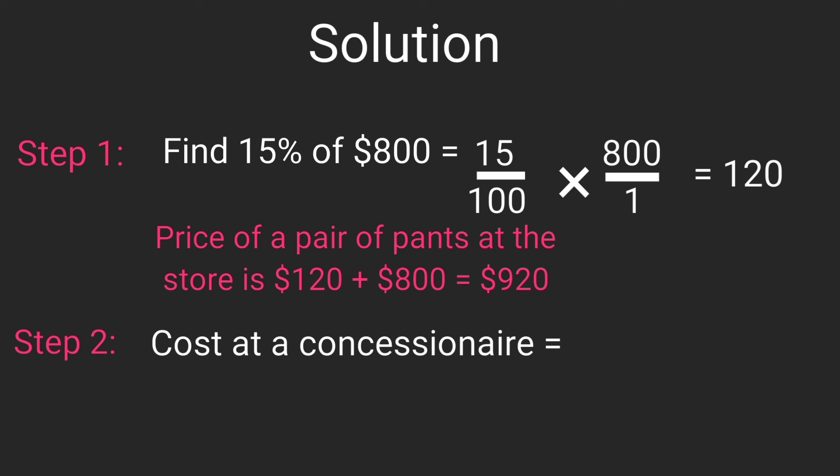Step 2, we're going to find the cost of a pair of pants at a concessionaire. That is to get 5% of the cost at the store and add it. So we say 5 divided by 100, multiply by 920 divided by 1. Remember, we're going to add the result to the cost at the store to get the final cost at the concessionaire. When you divide this out, you get $46.